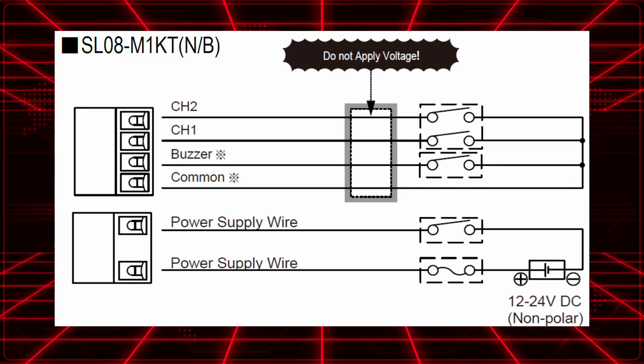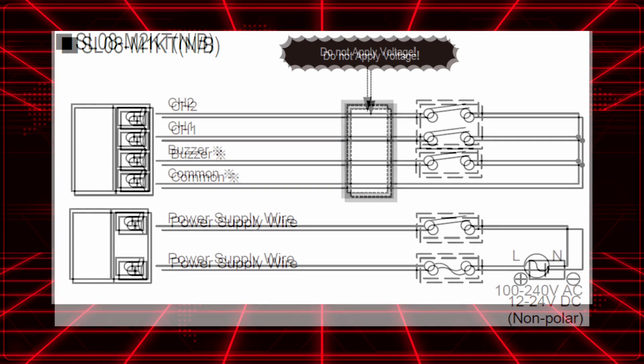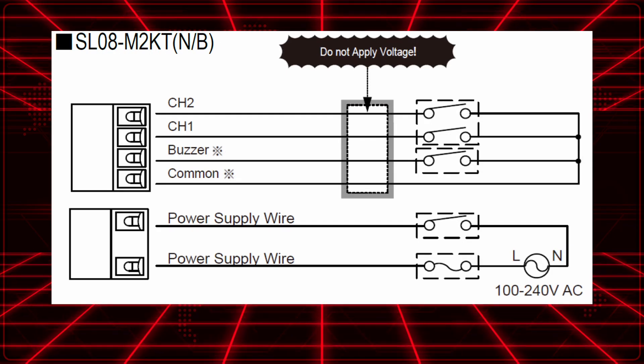The M1 beacons use 24 DC, while M2 use 100 to 240 AC.